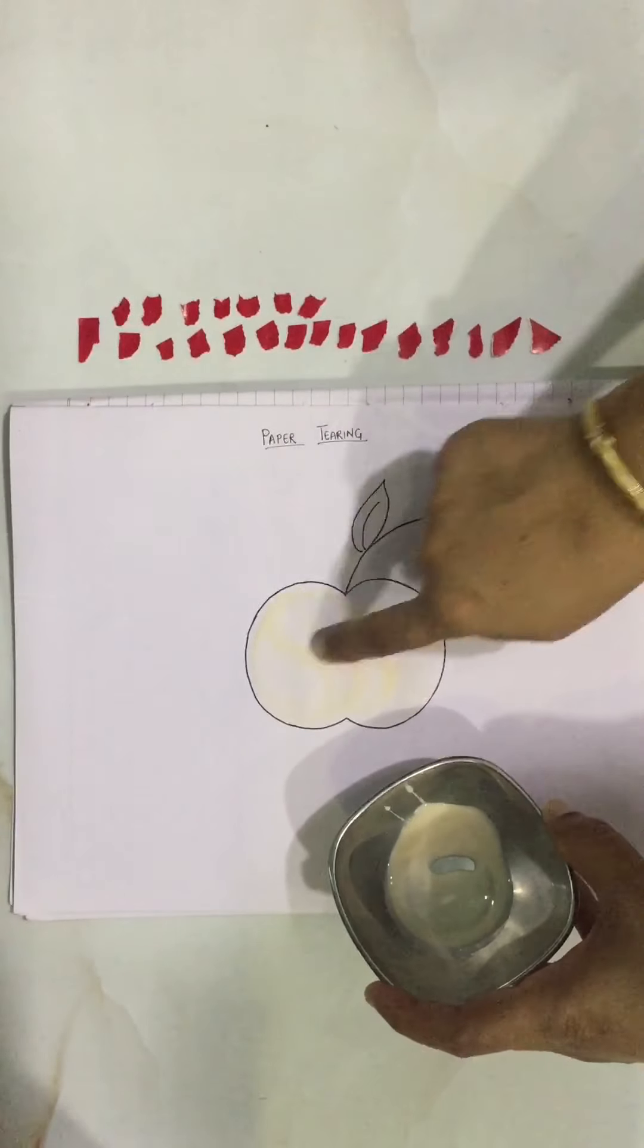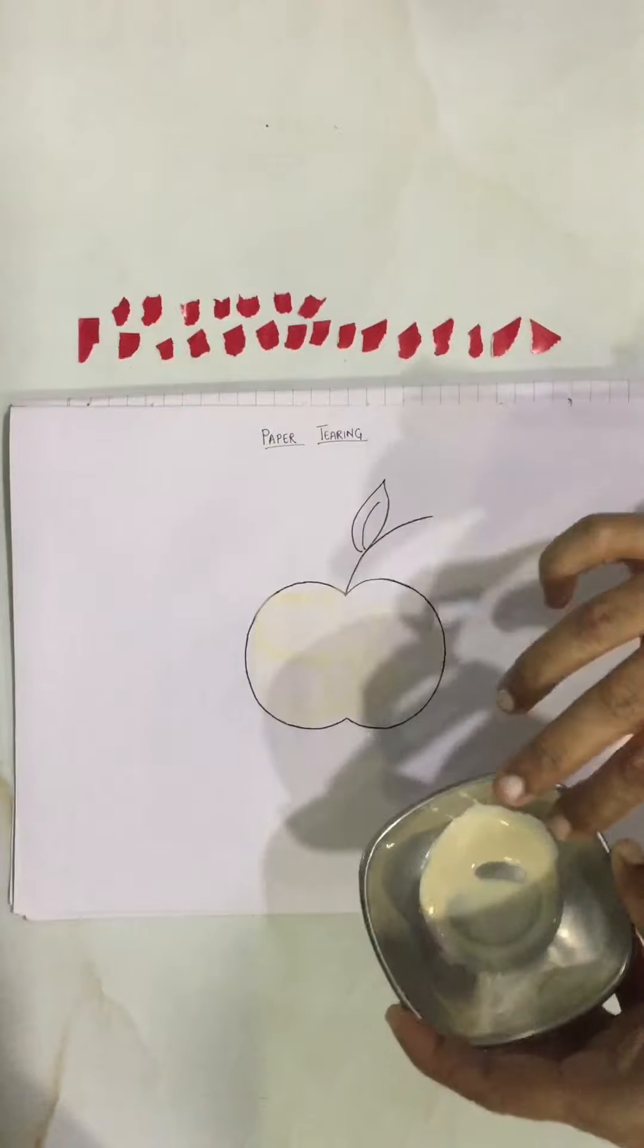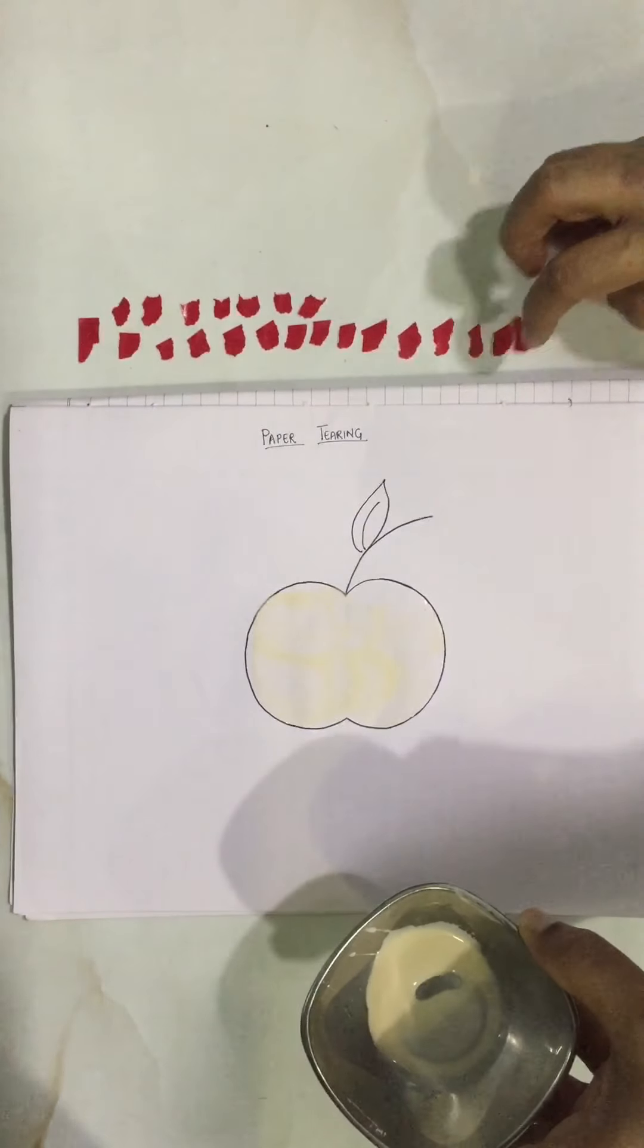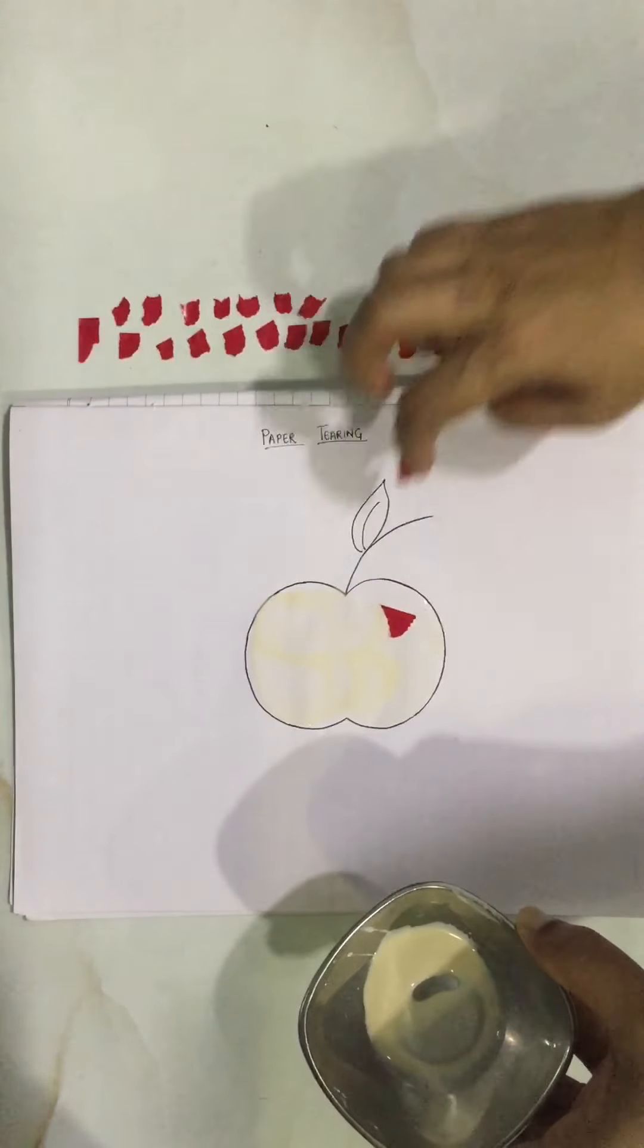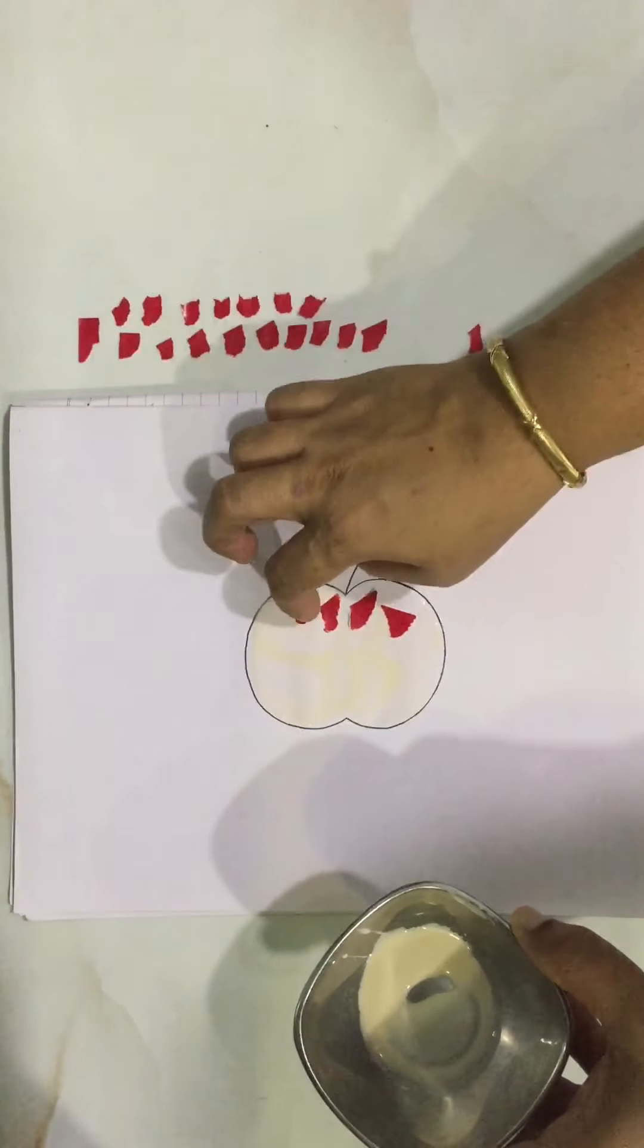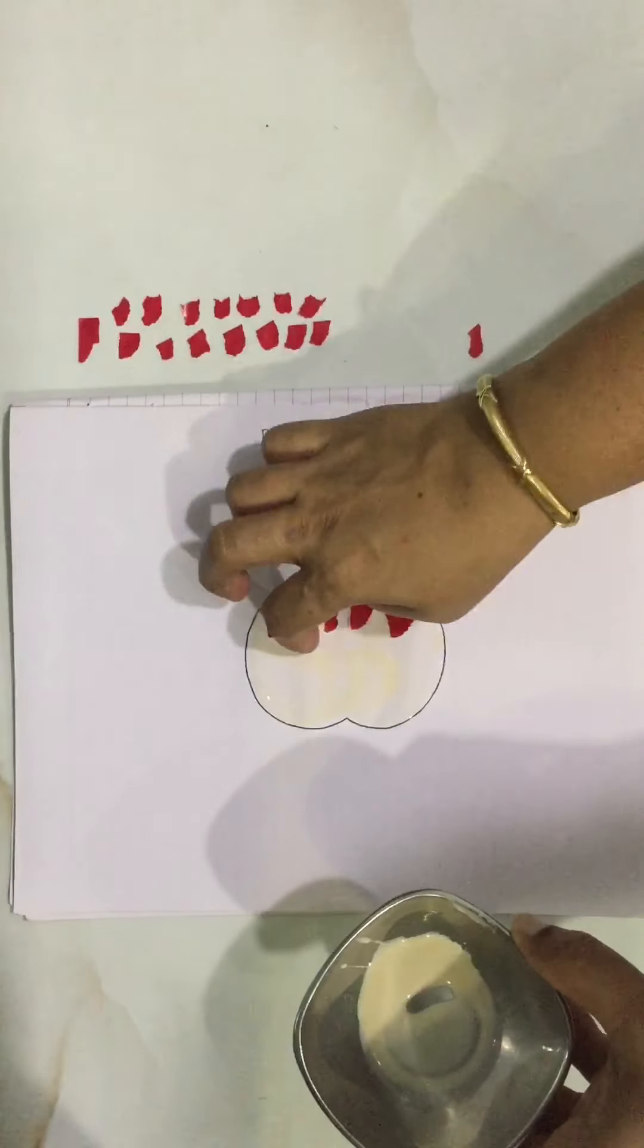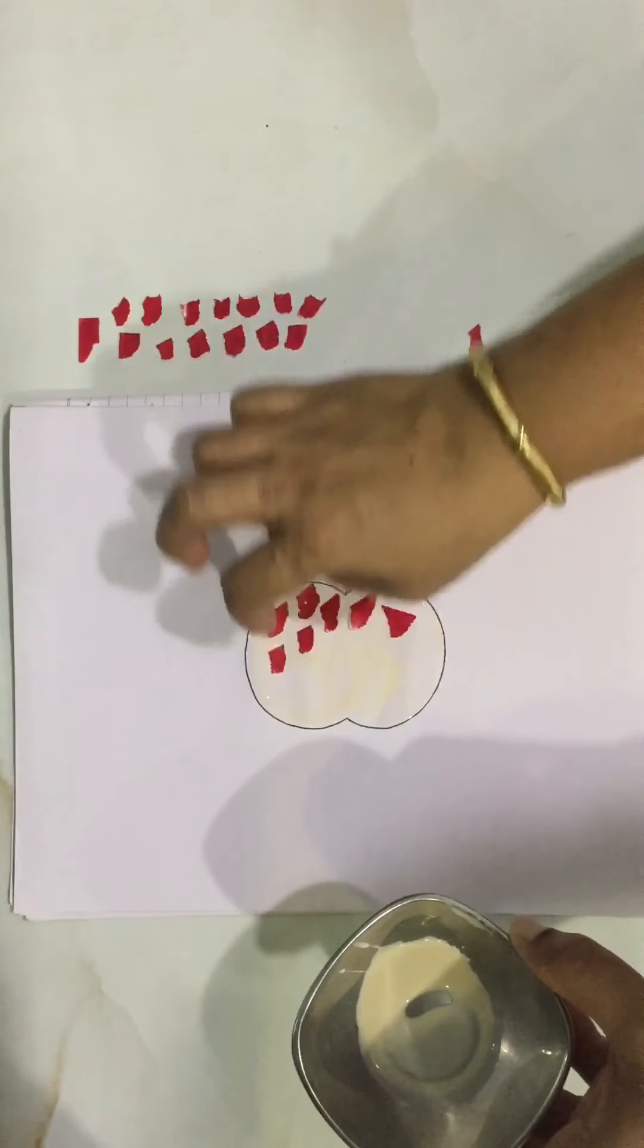And then what are we going to do? We are going to fill in the color, the red color. So what are we going to do? We are going to take it up. Pick, tuck, pick, tick, tick, tick. You are going to put it all over the apple like this. All over the apple.